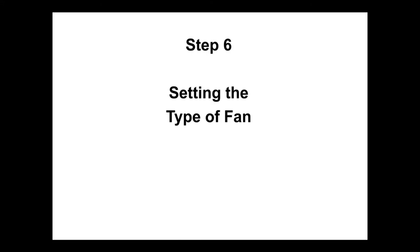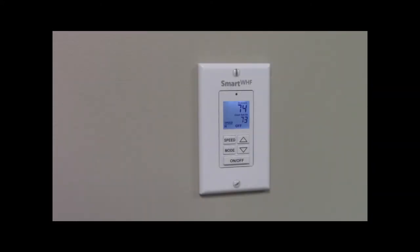Step 6 is setting the type of fan. Apply power to the whole house fan. The WTT defaults to a 2-speed fan.